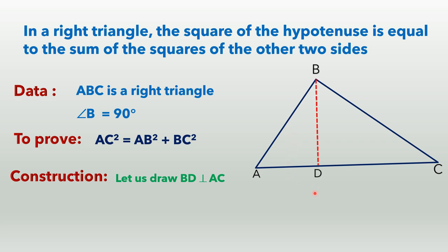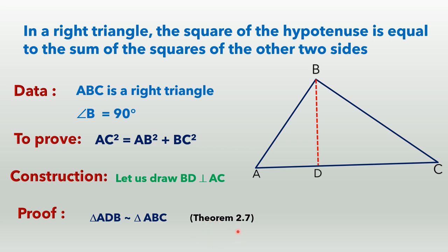We will prove this with the help of similar triangles. In the construction, let us draw a perpendicular BD to AC. Now, compare triangle ADB with the original triangle ABC. These two triangles are similar triangles because of Theorem 2.7. Theorem 2.7 states: if a perpendicular is drawn from the vertex of the right-angled triangle to the hypotenuse, then the triangles formed on both sides of the perpendicular are similar to the whole triangle and to each other. With the help of this theorem, we will prove.